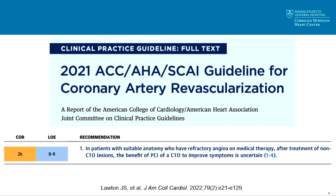Stefan will be talking about whether the guidelines got it right. The second big piece of literature is the Global CTO Algorithm. There are a multitude of different algorithms used by different providers, so the thought was to create a cohesive global one that captured the essence of the North American hybrid algorithm, the Asia-Pacific algorithm, and the European and Latin algorithms as well. There are four notable changes compared to the hybrid algorithm.